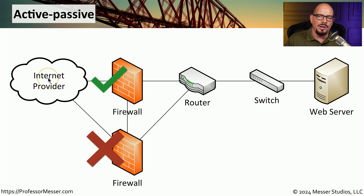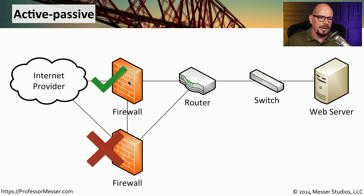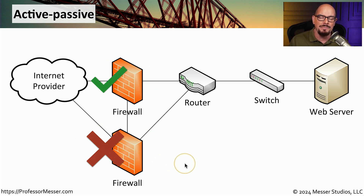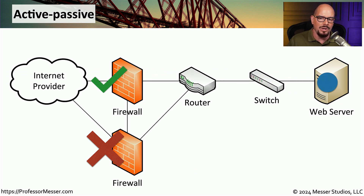Visually, this is how it would look on a network map. You have an internet provider — our network connection out to the rest of the world. There are two firewalls in this configuration, and behind the firewall is a router, a switch, and a web server. These two firewalls are running as an active-passive configuration. One of the firewalls is active, and the other firewall is in a standby or passive mode. When traffic is sent through the network, that traffic passes through the active firewall to the web server on the other side.